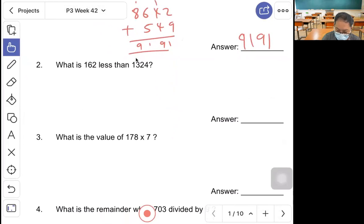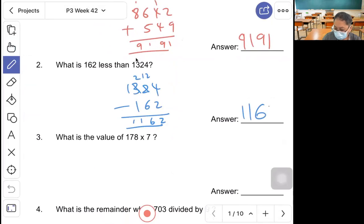Question 2, what is 162 less than 1,324? Let's work it out. Borrow, 1,162.